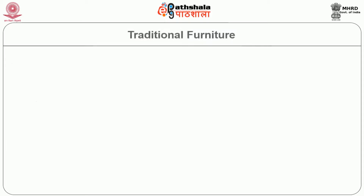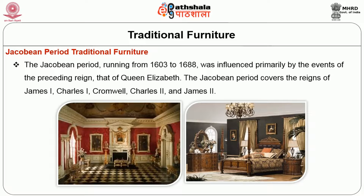The first style is the Jacobean period, or traditional furniture. The Jacobean period, running from 1603 to 1688, was influenced primarily by the events of the preceding reign — that of Queen Elizabeth. The Jacobean period covers the reigns of James I, Charles I, Cromwell, Charles II, and James II.